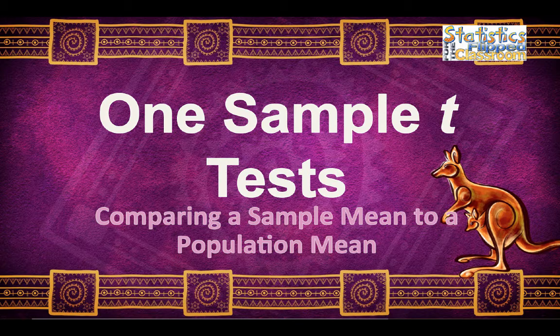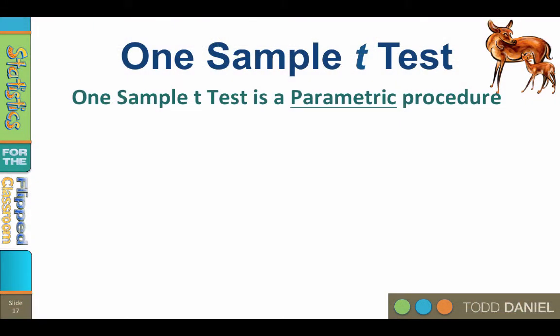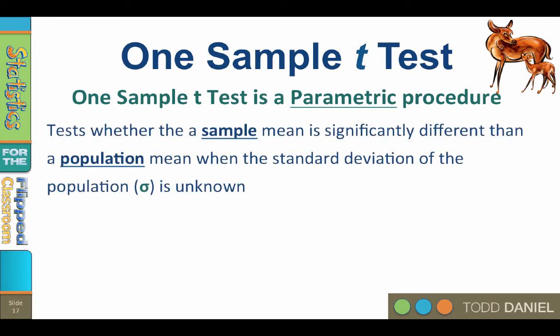The one-sample t-test allows us to compare a sample mean to a population mean to determine if they are statistically significantly different. It is the next step in learning about hypothesis testing. The one-sample t-test is a parametric procedure. It tests whether a sample mean is statistically significantly different than a population mean when the standard deviation of the population, or sigma, is unknown.